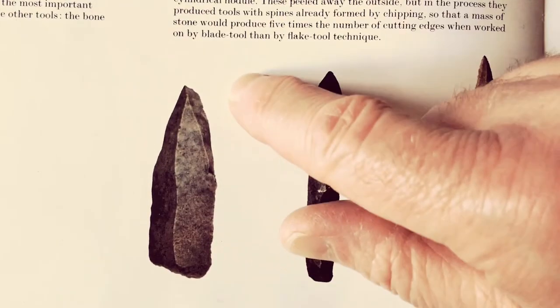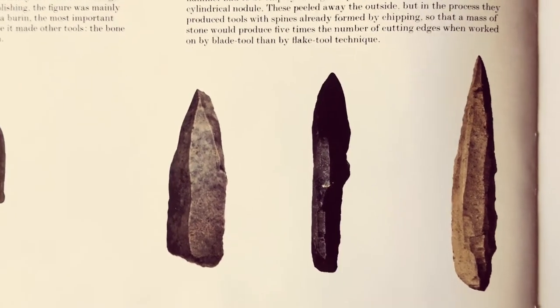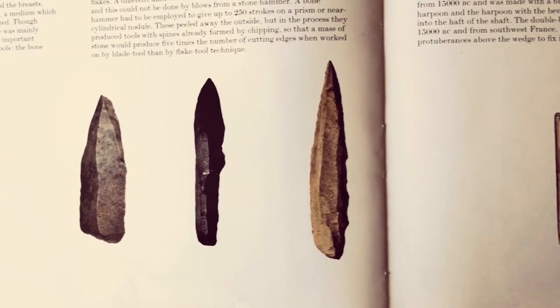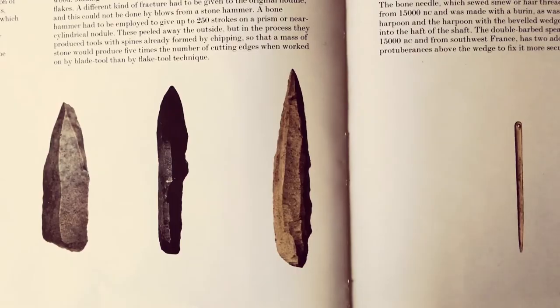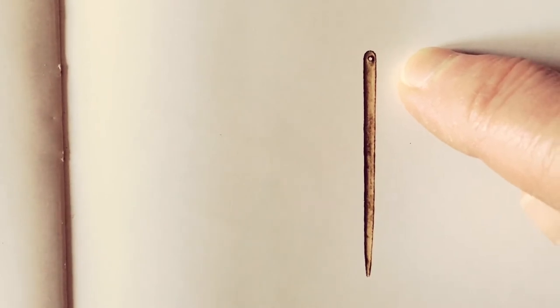While technology as a whole may develop exponentially, individual technologies do not. We don't really use stone tools anymore — their technological evolution has come to an end. Take the sewing needle: humans' first attempts at sewing made use of a pointed flint called a burin, which drilled a hole and the thread was pushed through. The burin evolved into the slender needle with an eye for the thread, originally of bone, now of steel. This technology reached perfection some 30,000 years ago and, apart from minor improvement in materials, has hardly changed since.